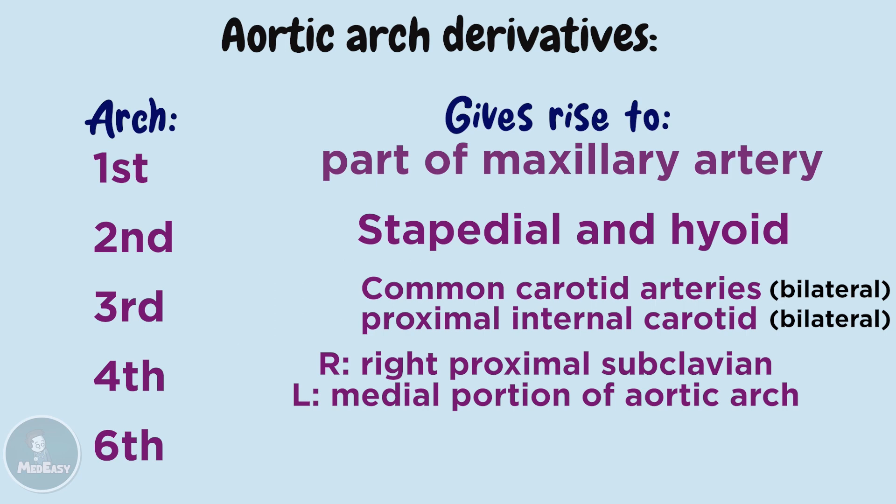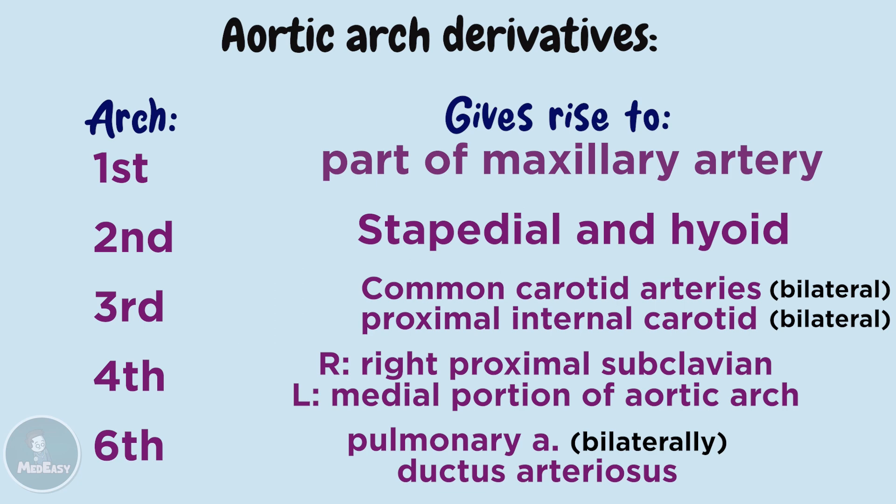The fifth arch either never forms or forms incompletely and then regresses, hence it's excluded from this table. The sixth arch will contribute to the formation of the pulmonary arteries bilaterally, and part of the sixth arch will form the ductus arteriosus, which later closes and is termed the ligamentum arteriosum.